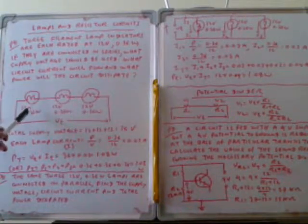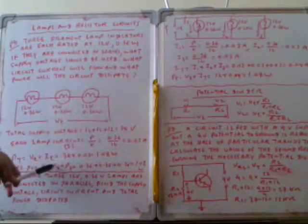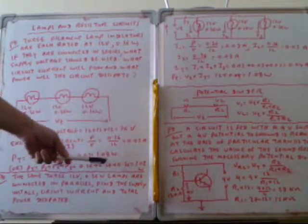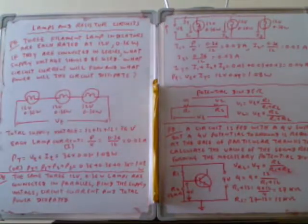Similarly, you can also add the individual powers. Total power P_T = P1 + P2 + P3 = 0.36 + 0.36 + 0.36 = 1.08 watts. This is another way to calculate total power.